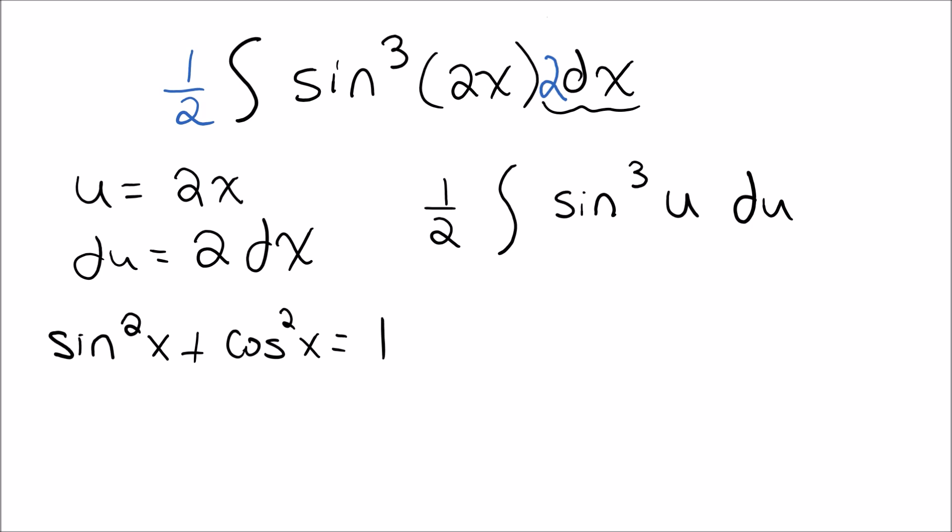Because what I can do is, I can rewrite the problem here, if I just rewrite this as 1 half the integral of sine squared u times sine of u du. I'm just breaking up the sine cubed into sine squared sine. And the reason why I'm going to do this here is because I can now get sine squared u to have a cosine in it, which I know cosine and sine, you can take derivatives of them to get the other, obviously with your plus and minuses. And that's what we want to get here.